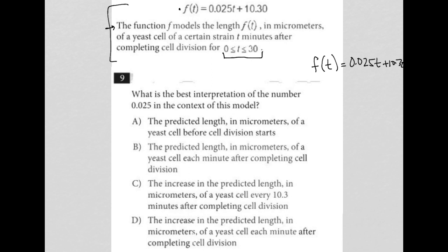Let's notice the structure of this. This structure is the same as y equals mx plus b, where m is the 0.025 and b is the 10.3. The question is asking for the interpretation of the 0.025, which means it's basically asking what is a slope?